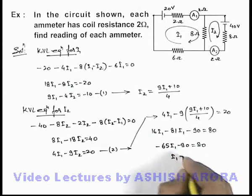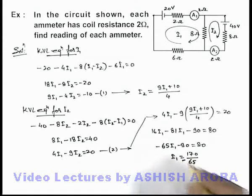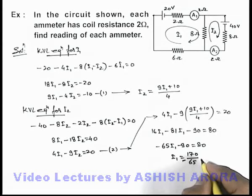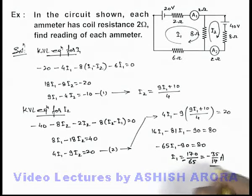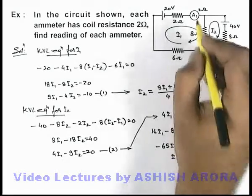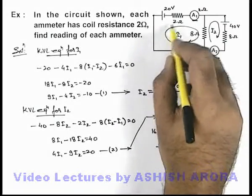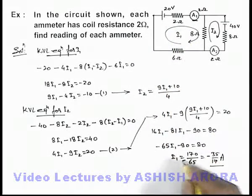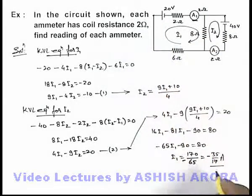So here the value of i1 I'm getting is 170 divided by 65, but since this is the negative of i1, it will be minus 170 by 65. In this situation the value I'm getting is i1 = minus 35 by 17 ampere. That will be the reading of ammeter A1. I had taken i1 to be flowing clockwise, but I'm getting i1 negative, which means actually the current is flowing in this loop in anti-clockwise manner, with a magnitude of 35/17 ampere.